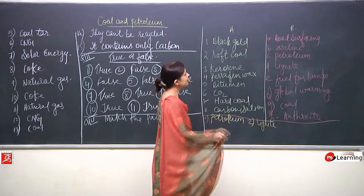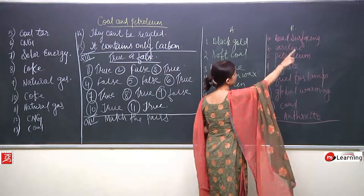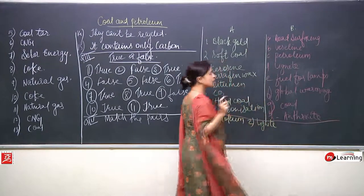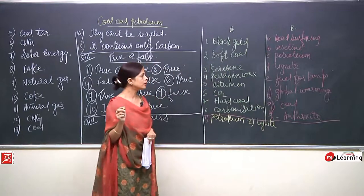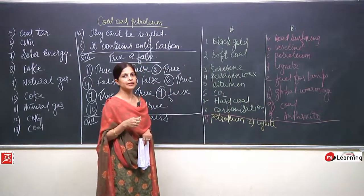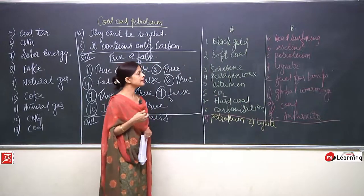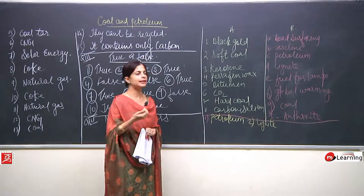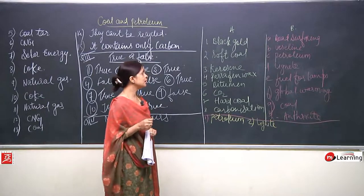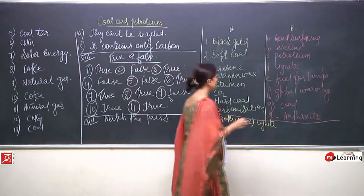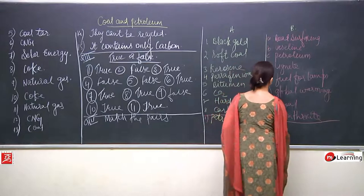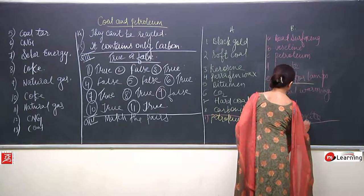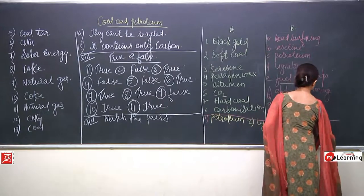Kerosene — it cannot be used for road surfacing, vaseline no. Now if you remember, even now if you talk about villages in rural areas, you will find lamps being used, and in these lamps people use kerosene. So the third one is fuel for lamps.